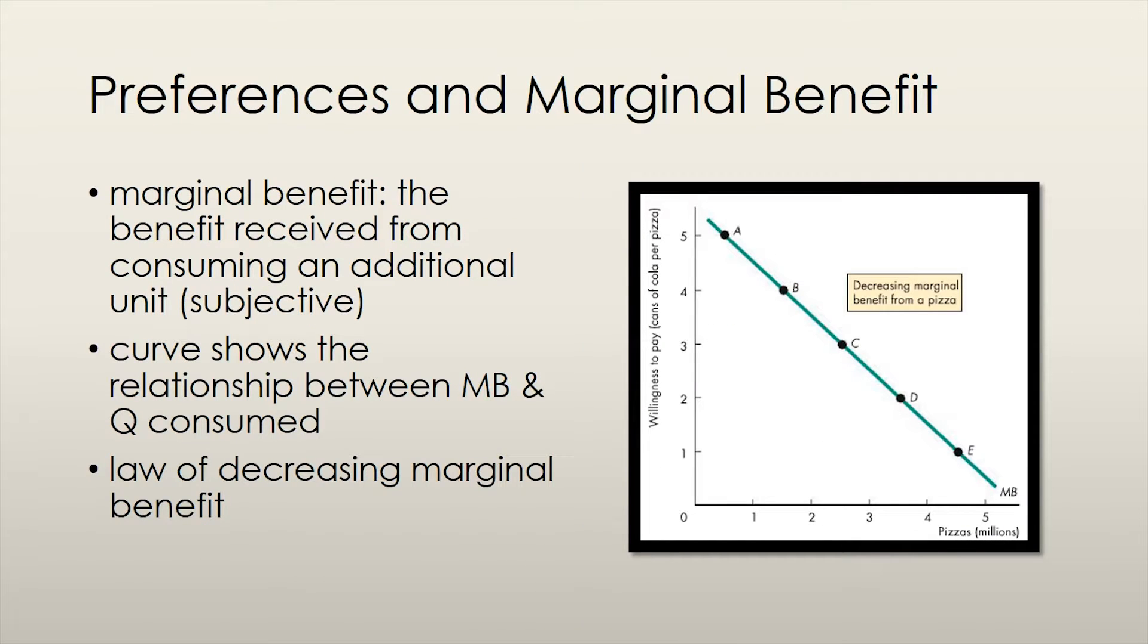I mentioned the word benefit before, and I will now expand a little bit more on this concept. Marginal benefit is defined as the benefit received from consuming an additional unit of a good. Benefit is subjective because people's own personal preferences affect the benefit they receive from consuming an additional unit of a good. The marginal benefit curve on the right shows the relationship between the benefit received per unit of pizza consumed and the number of units of pizza consumed.